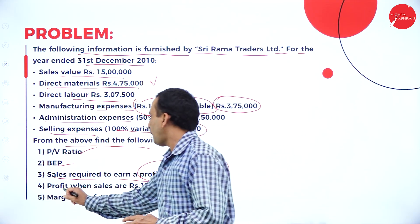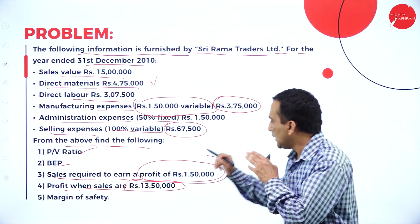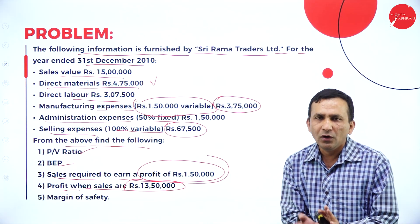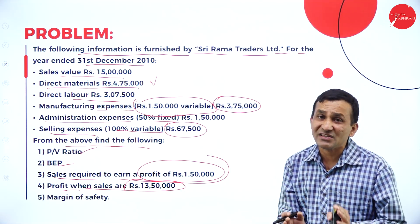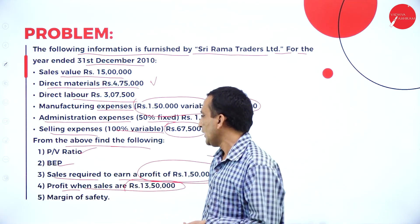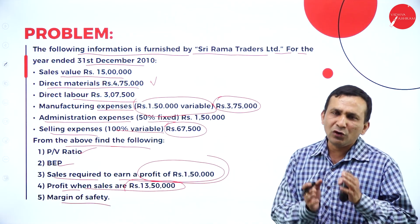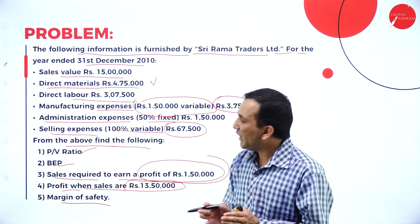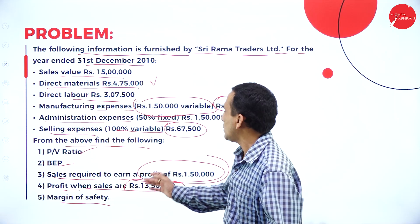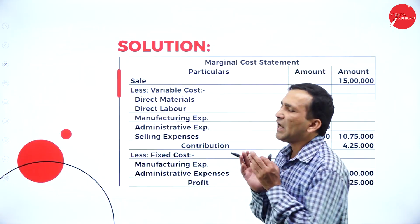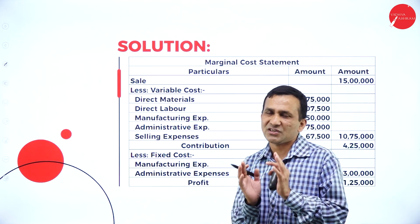From the above information, find the following: first, calculate PV ratio using the formula contribution divided by sales into 100. BEP is to be found in both units and sales value. Also find sales required to earn a given profit, and profit when sales is 13 lakh 50,000. Lastly, find the margin of safety. So first we are preparing the marginal costing statement from the information given in the question.